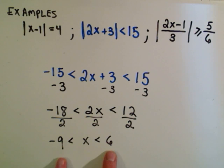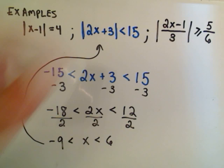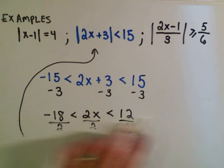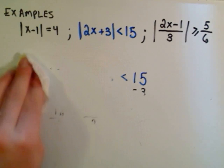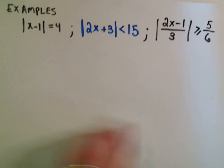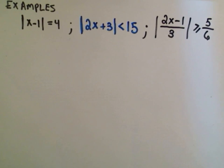You can always check this. Take a number between negative 9 and 6, plug it back into the original inequality. See if you get a number on the left side so that the absolute value of it is less than 15. Certainly 0 is a number in there, so 0 certainly works. Just a quick check to make sure everything's at least not blatantly incorrect.